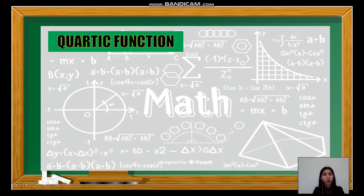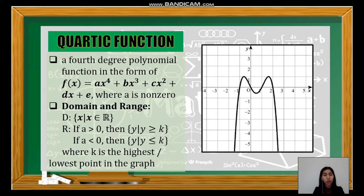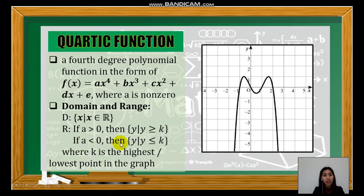Next, we have the quartic function. It is a fourth-degree polynomial function wherein the term ax⁴ should not be equal to 0. For the domain, it is the set of real numbers. For the range: if a > 0, the range is y ≥ k, where k is the lowest point in the graph. If a < 0, the range is y ≤ k. In the example shown, the quartic function opens downward, so the highest point k is 1, and the range is y ≤ 1.